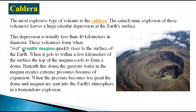Caldera volcanoes form when granitic magma quickly rises to the surface of the earth. When it gets to within a few kilometers of the surface, the top of the magma cools to form a dome. Beneath this dome, gaseous water in the magma creates extreme pressure due to expansion. When the pressure becomes too great, the dome and magma are sent into the earth's atmosphere in a tremendous explosion.